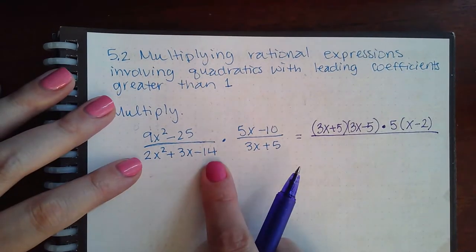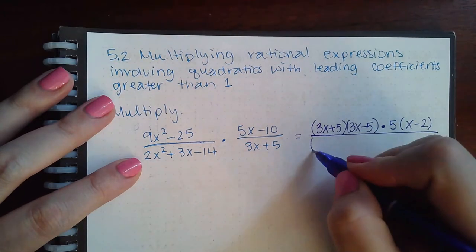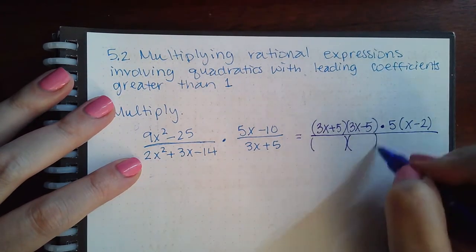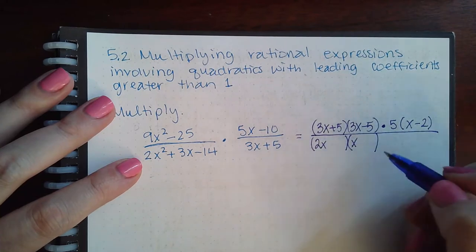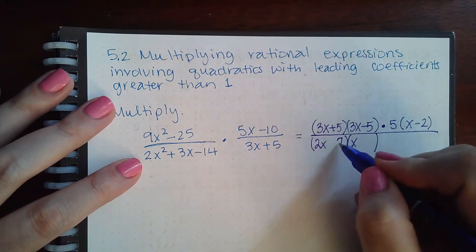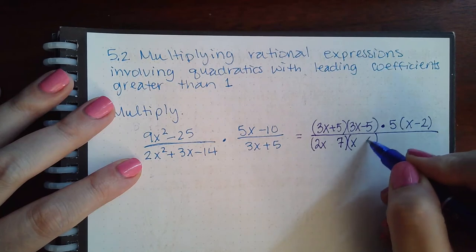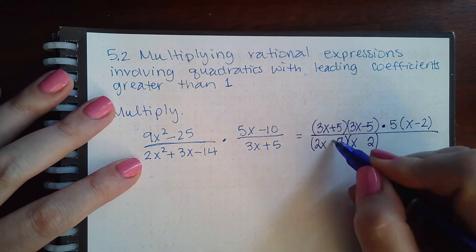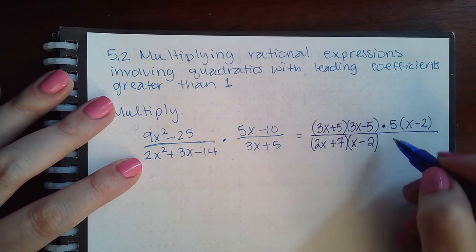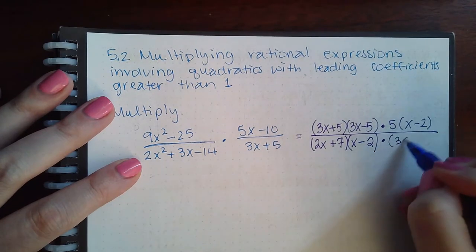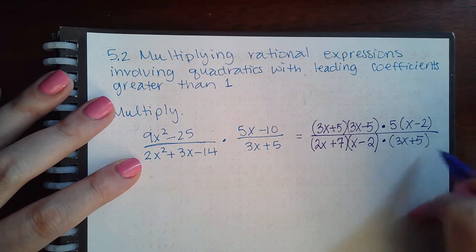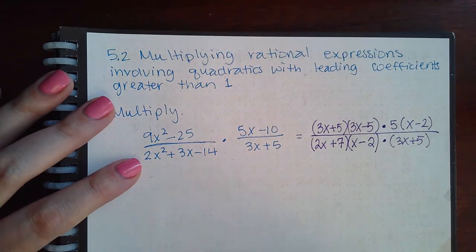Now this we have to factor. Depending on how you factor, that process might take a little longer for some and shorter for others, so it just depends on you. And then this factor cannot be factored any further, so I'm just going to put it in parentheses since I do have to multiply by the entire denominator 3x plus 5.